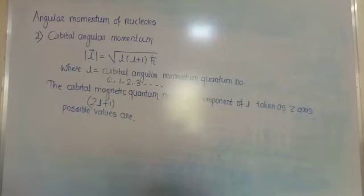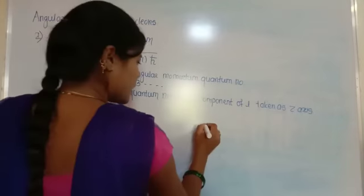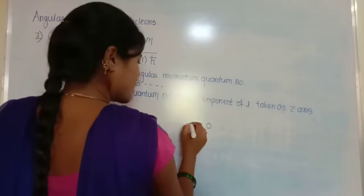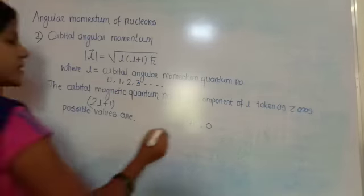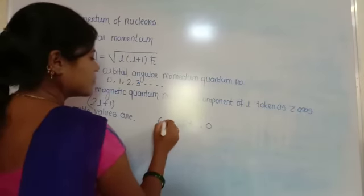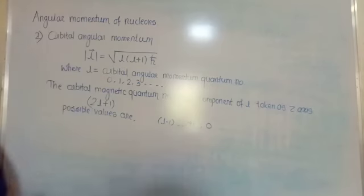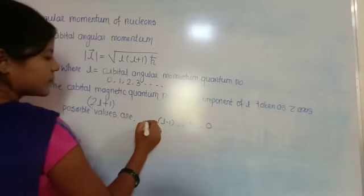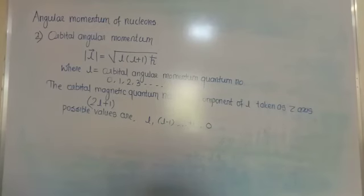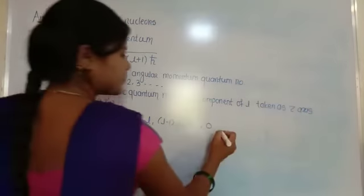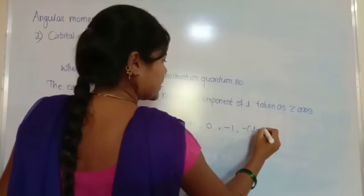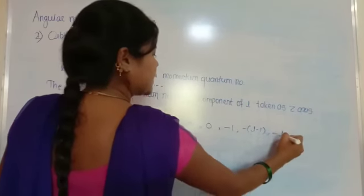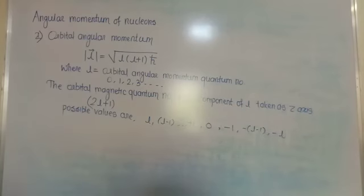The possible values of m_l are: l, l−1, …, +1, 0, −1, …, −(l−1), −l. These are the values of the orbital magnetic quantum number.